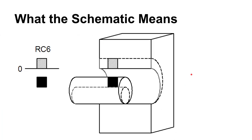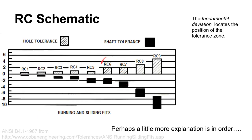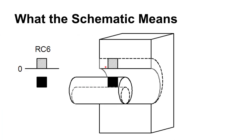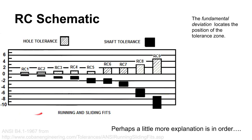Here's the map of the RC tolerance scheme. For RC6, there are two little zones: the band on top shows that the hole can be as small as the basic size — no fundamental deviation between the basic size and the hole — and the size of that band shows the tolerance. Then there's the allowance between the shaft and the hole, and the solid rectangle shows the size of the tolerance zone for the shaft.